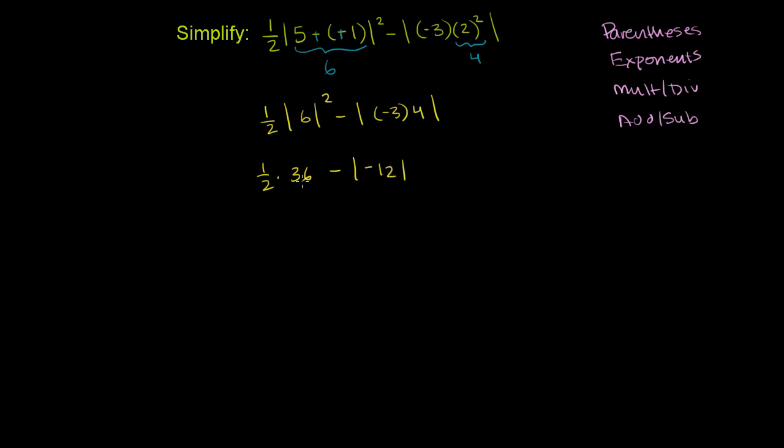Now, we want to do multiplication before we do any subtraction over here. So we can safely do this multiplication first. I could put parentheses around it to show you that we'll do it first. So 1 half times 36, that is going to be 18. And so we have 18 minus the absolute value of negative 12.